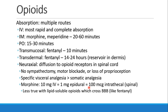Opioids can be administered by multiple routes. IV is the most rapid and complete absorption. They can be given intramuscularly — morphine or meperidine — with effects starting at about 20 minutes and peak within 60 minutes. Opioids can be taken orally, transmucosally as a lollipop absorbed through the cheek, or transdermally as a patch. We can also give opioids neuraxially, where they diffuse to opioid receptors in the spinal cord via spinal or epidural routes. The advantage over local anesthetics is there is no sympathectomy, no motor blockade, and no loss of proprioception, with visceral analgesia predominating over somatic analgesia.